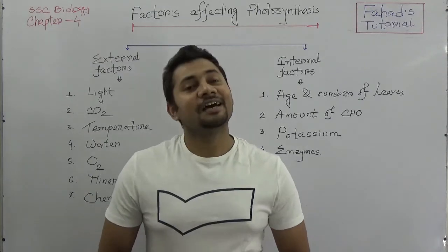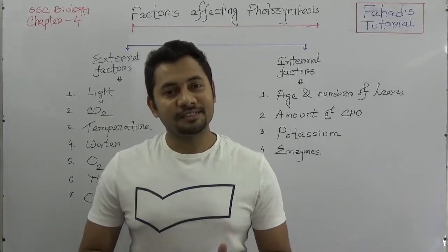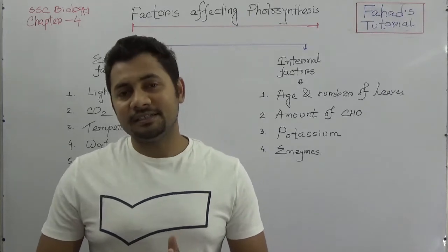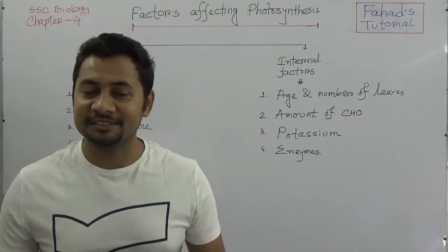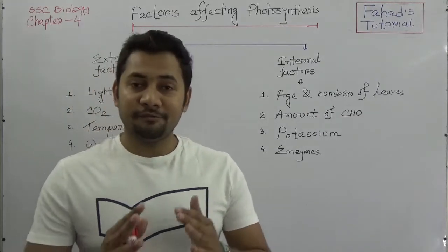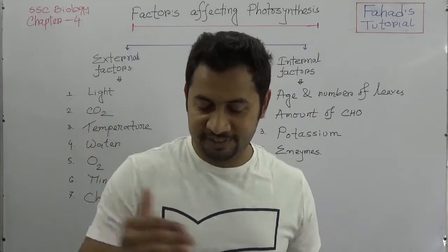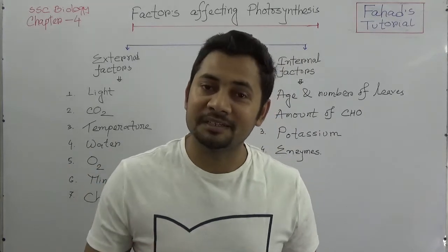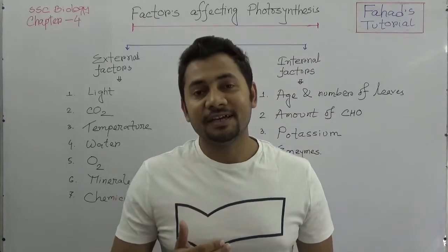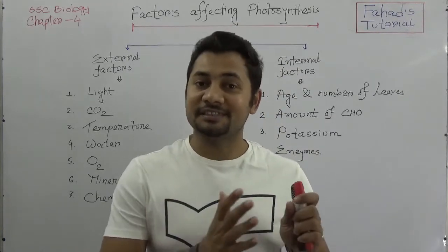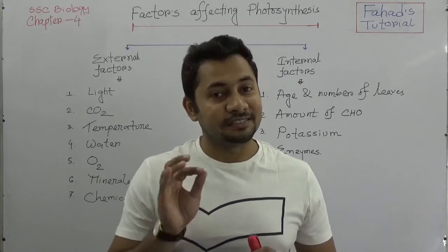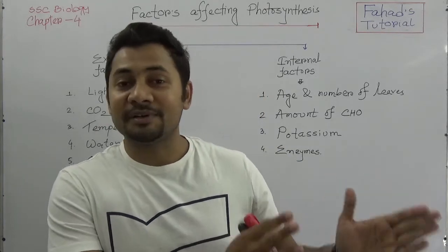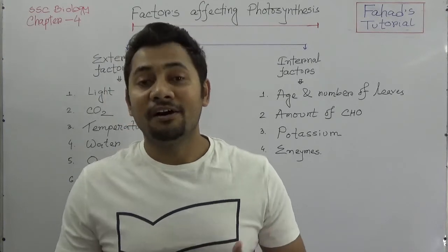Hello dear learners and students, I hope you are doing great and having good health. This video is about the factors which are affecting directly or indirectly the photosynthesis, and these factors are divided into two categories: external and internal. This is the fourth video of photosynthesis. In the process of photosynthesis, sunlight and chlorophyll are required, and carbon dioxide and water react to produce glucose, with oxygen as a byproduct.